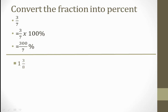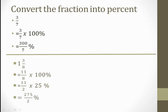Now here we have another question — this is a mixed fraction. First we convert it into improper fraction: 8 ones are 8 plus 3, giving 11 by 8. We are converting into percent, so we multiply with 100 percent. We can cancel 8 and 100 both with 4, leaving 2 and 25. Now 11 multiplied by 25 gives 275 over 2 percent.